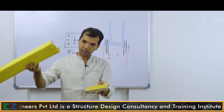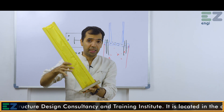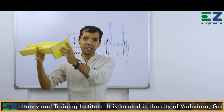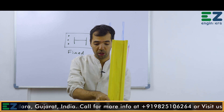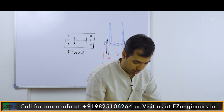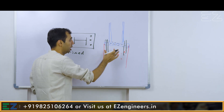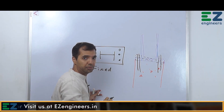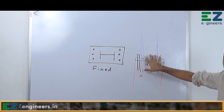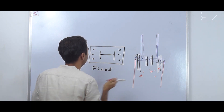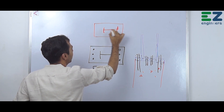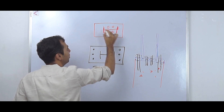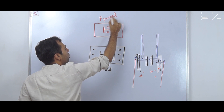This is a base plate and this is a column. The column is welded to the base plate, and this assembly comes and sits on the pedestal. Then anchor bolts are put on the pedestal in between — meaning like this, in between the column — so by putting anchor bolts in between, this will now be a pin support.